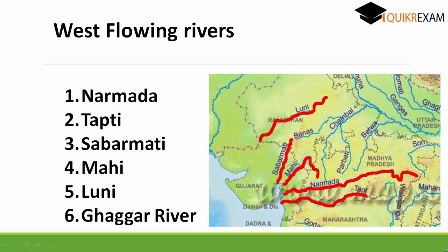Firstly, let's know the names of the rivers which are flowing in the western direction: Narmada, Tapti, Sabarmati, Mahi, Luni, and Khagar river.